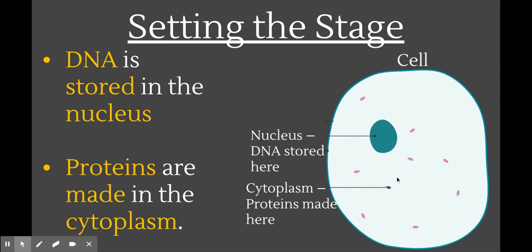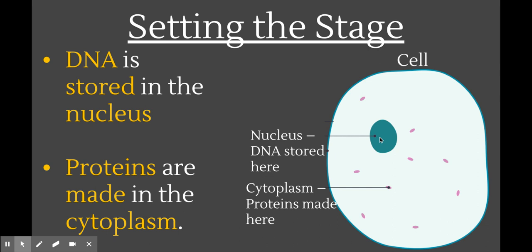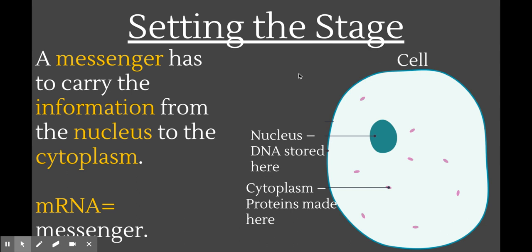Somehow the instructions in the DNA have to make their way out of the nucleus into the cytoplasm so that proteins can be made there. But the DNA can't leave the nucleus. So how do you get the instructions out if they're stuck in the nucleus? We're going to need something else to carry the message for us, and that is mRNA. The little M at the beginning of mRNA stands for messenger. mRNA is basically a copy of a gene from a DNA molecule that gets made and then sent out of the nucleus to carry that message to a ribosome in the cytoplasm to make a protein.